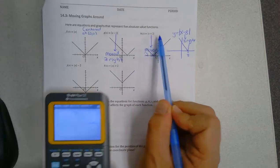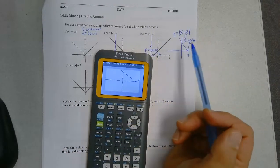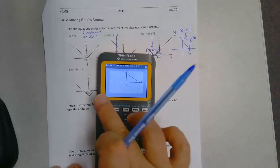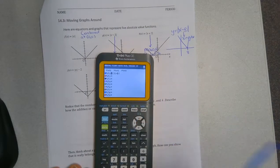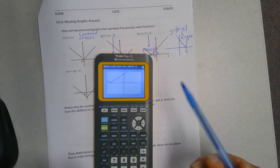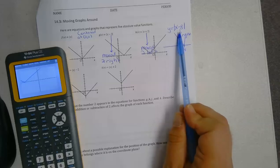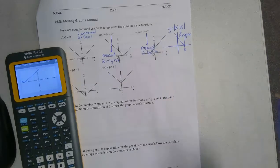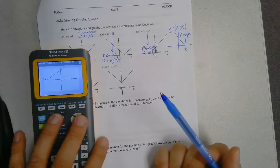What about if I did x plus 8? What's that going to happen? So I would think that's going to move it eight spots left. But let's try it out. So x plus 8. And that's it. It moves it eight spots left. So it looks like if I subtract, it moves it that many units to the right. And if I add, it moves it that many units to the left.